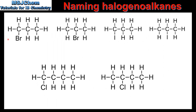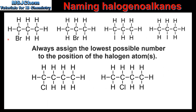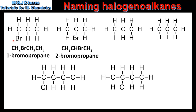In the next examples we have to use numbers to show the position of the halogen atom in the compound. Starting with the 2 molecules on the left, which are structural isomers: the molecule on the left has the bromine atom on carbon number 1, therefore it is named 1-bromopropane. The molecule on the right has the bromine atom on carbon number 2, therefore it is named 2-bromopropane.